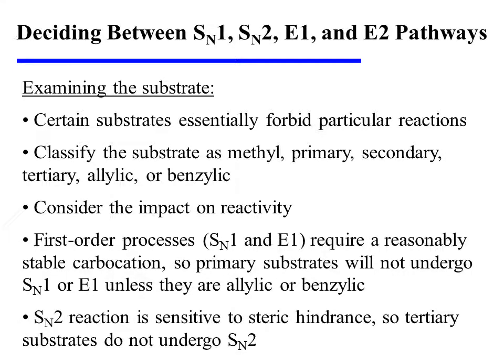It is also important to examine the substrate before making a decision about the reaction's pathway, as certain substrates will essentially forbid particular reaction pathways. We should begin by classifying the substrate as methyl, primary, secondary, tertiary, allylic, or benzylic, and then consider the impact on reactivity. First-order processes — meaning SN1 and E1 reactions — require reasonably stable carbocation intermediates, so primary substrates will not undergo SN1 or E1 unless they are allylic or benzylic and consequently have resonance stabilization. Also, SN2 reaction is sensitive to steric hindrance, so tertiary substrates do not undergo SN2.